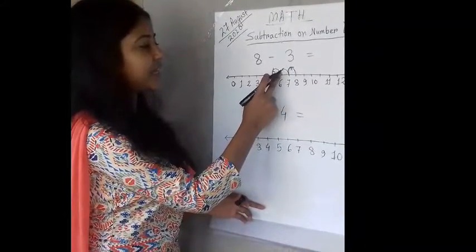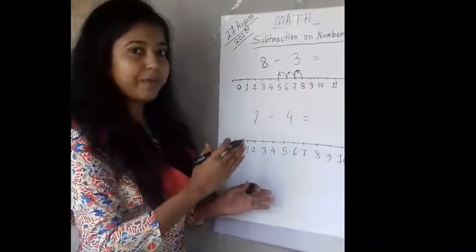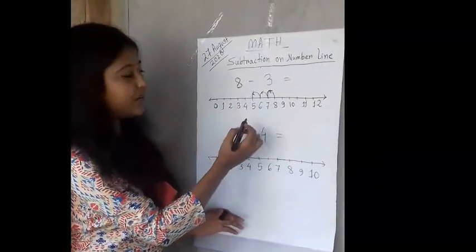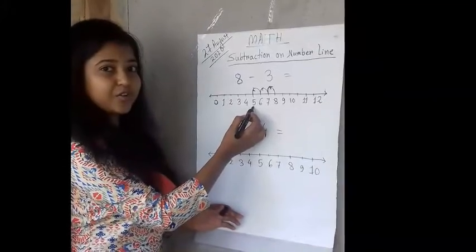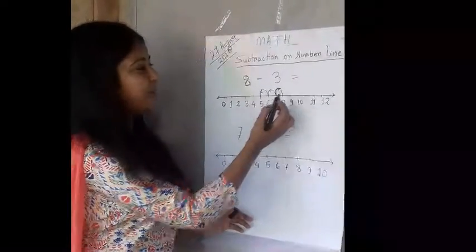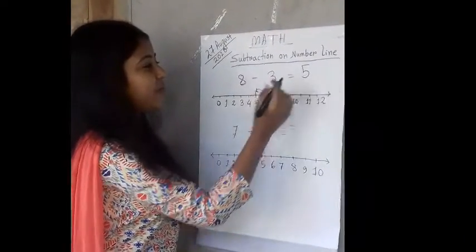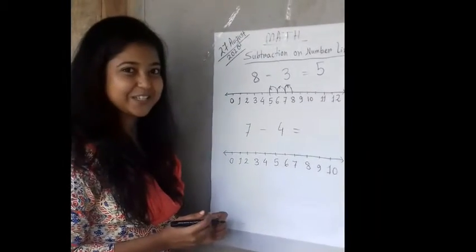So from 8, from 7, then 6, then 5. We will count backward. Now which number we got? We got 5. So answer will be 5. Hope you have understood.